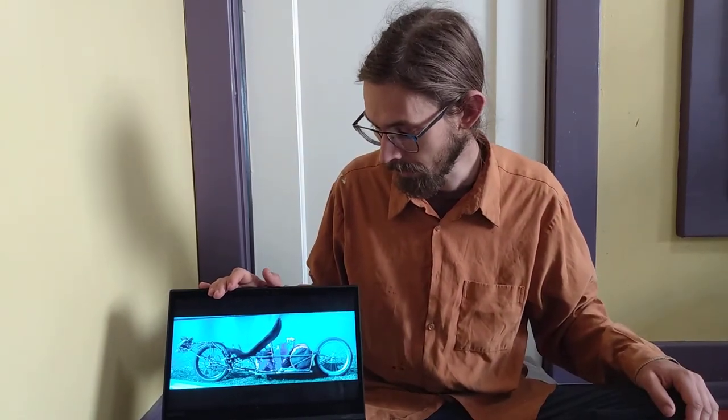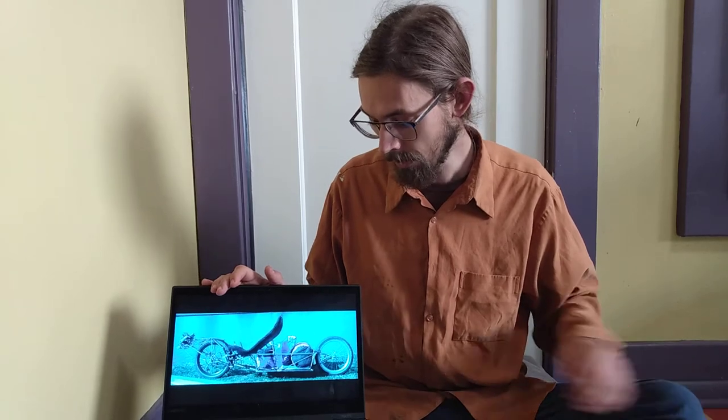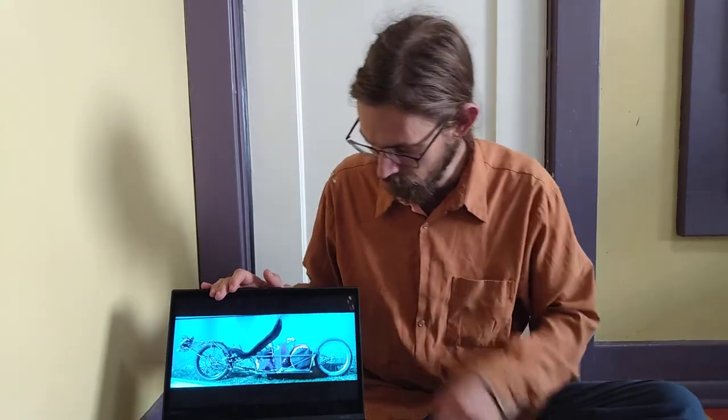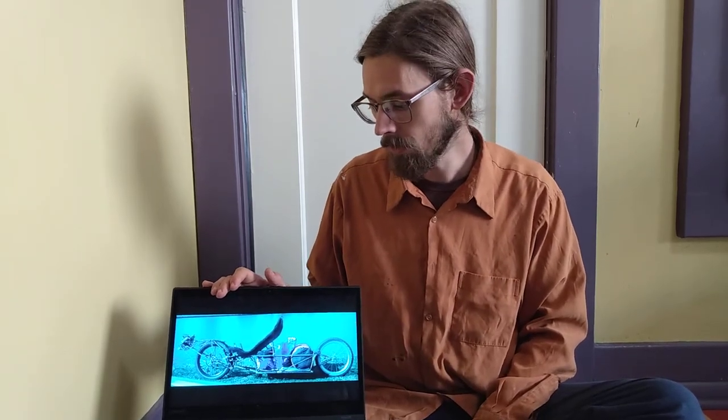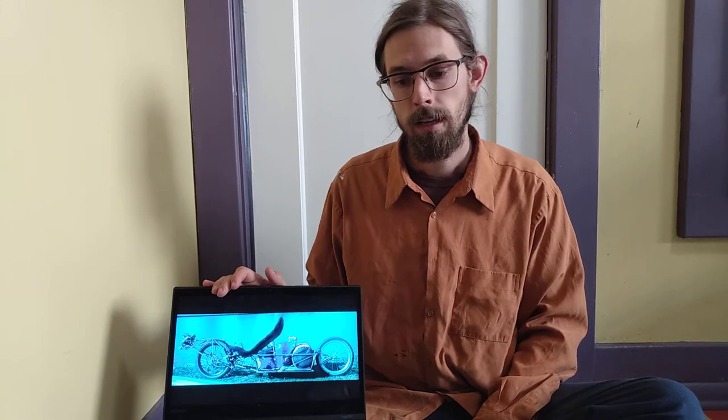Not all cargo recumbents have to be trikes or quads. This is another Python, yet again. This one's a bike, and it just has a bunch of cargo crammed in between the seat and the rear wheel.